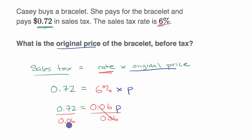12 times 6 is 72. 0.06 times 12 would be 0.72. So this equals 12. The original price of the bracelet before tax is $12. You can verify that: 6% of $12, 0.06 times 12, is indeed 0.72.